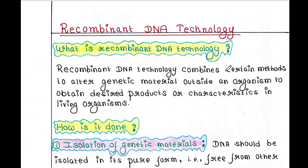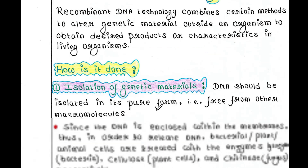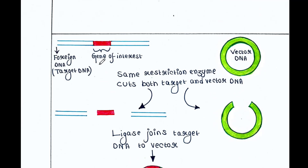Recombinant DNA technology combines certain methods to alter genetic material outside an organism to obtain desired products or characteristics in living organisms. Suppose this is your foreign DNA, or we can say target DNA, and in this DNA you have the gene of interest. Now you want to cut this gene and put it in this vector DNA. When you cut this DNA and put it in this vector DNA, you want this gene to be expressed as protein, and you need that protein. This is the purpose of recombinant DNA technology.